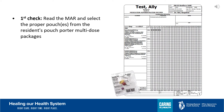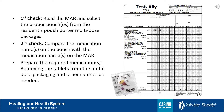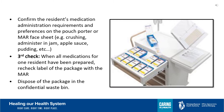For your first check, read the MAR and select the proper pouches from the resident's pouch porter and other multi-dose packages. For your second check, compare the medication names on the pouch with the medication names on the MAR. Prepare the required medications, removing the tablets from the multi-dose packaging and medications from other sources as needed. Confirm the resident's medication administration requirements and preferences, for example whether you need to crush or administer in food. For your third check, when all your medications for that resident have been prepared, recheck the label of the package with the MAR and dispose of the packaging in the confidential waste bin.